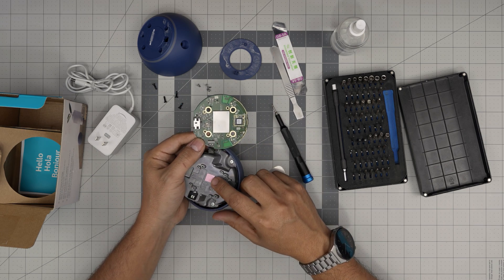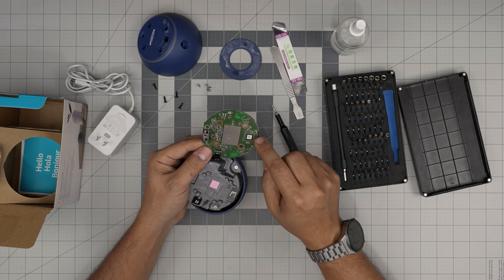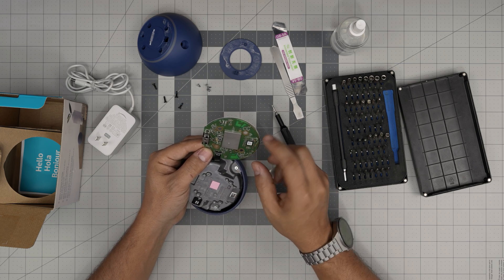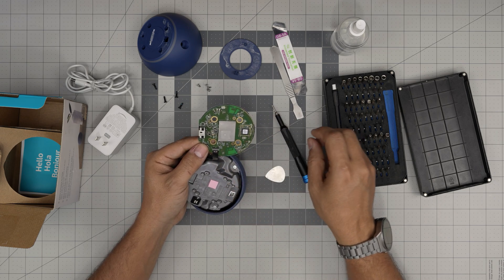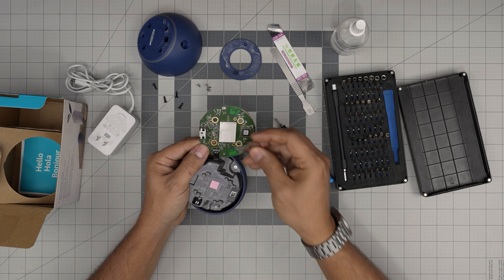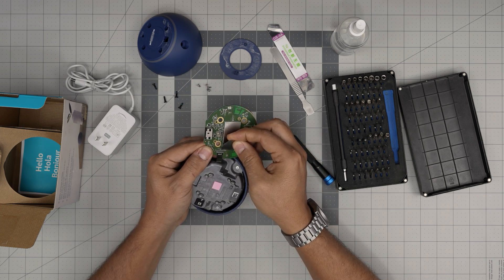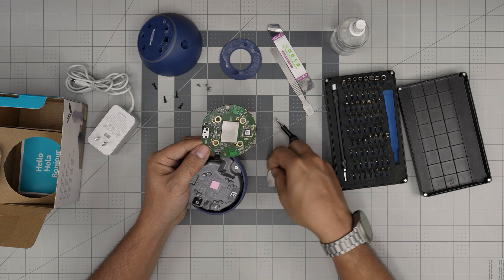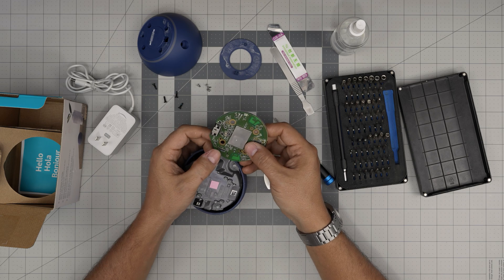I can see there's a little thermal pad here to cool down the main processor unit and the Wi-Fi board. To disconnect this flex cable, you want to use your fingernail or guitar pick to lift up this bar 90 degrees upward, then slide the flex cable back. Do not yank the flex cable without pulling up this lever.